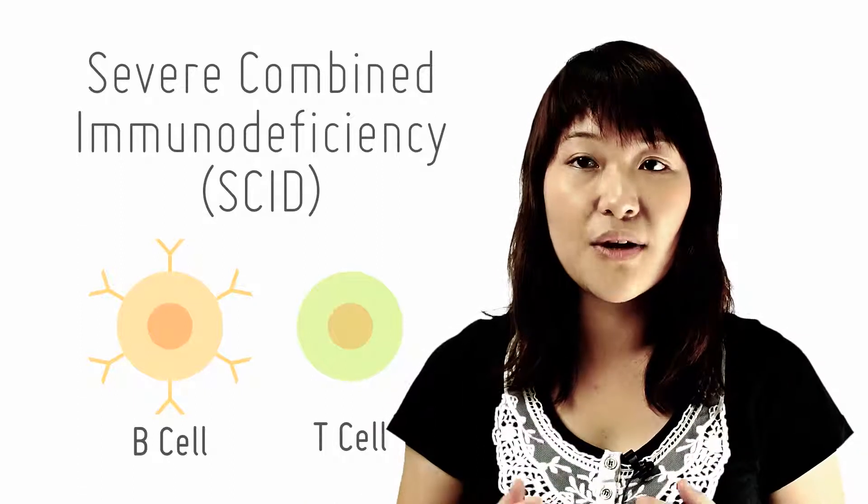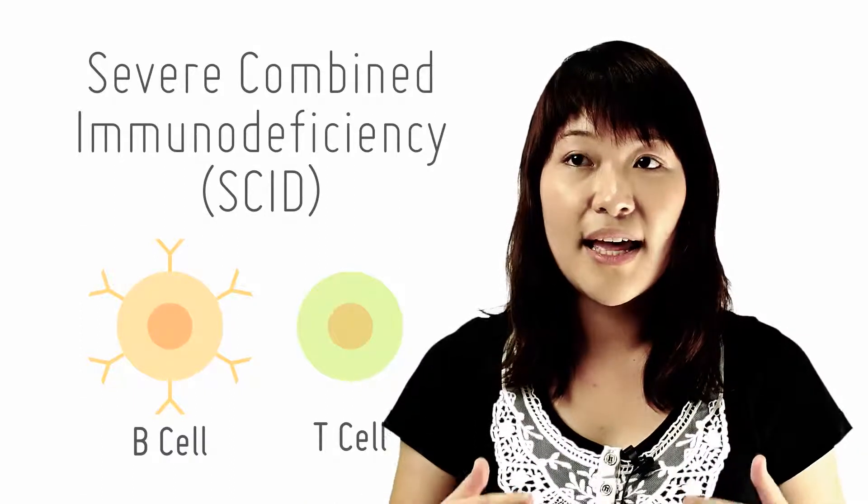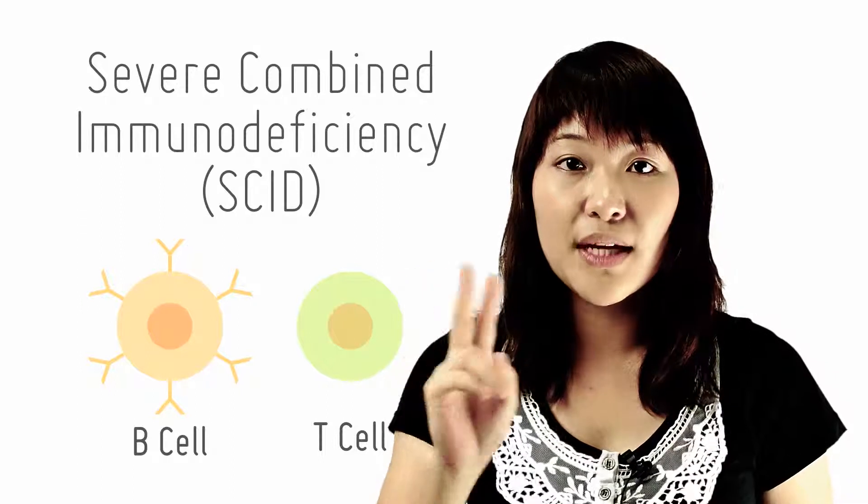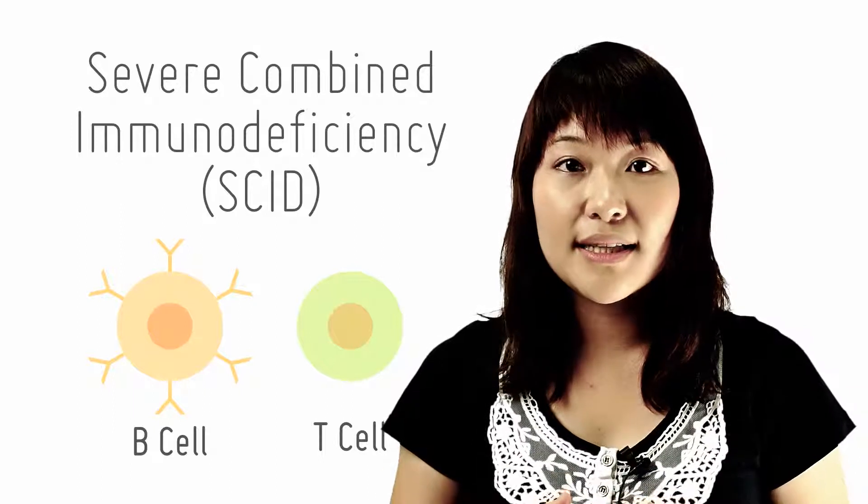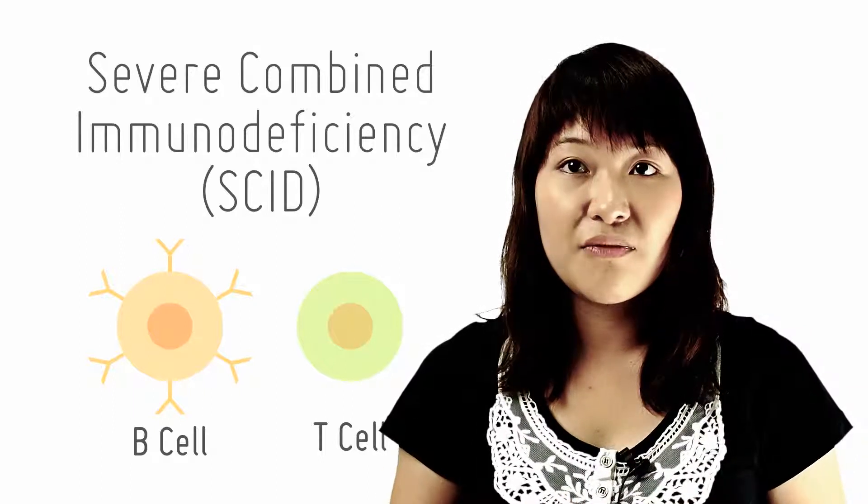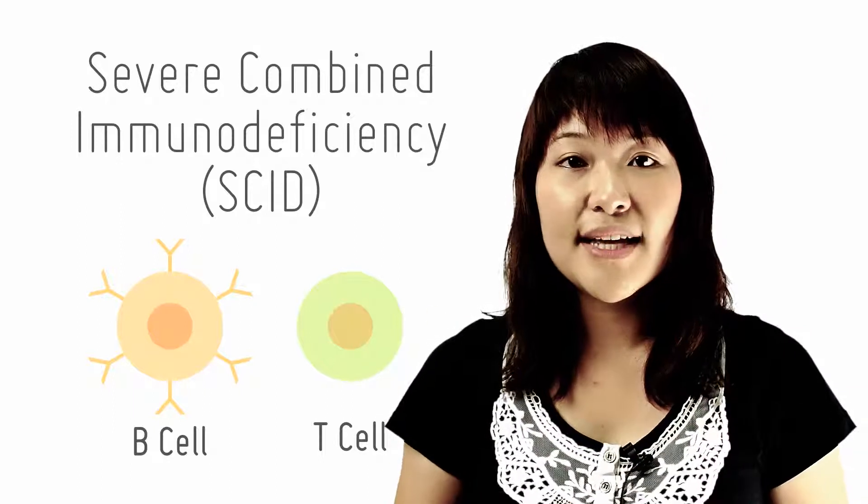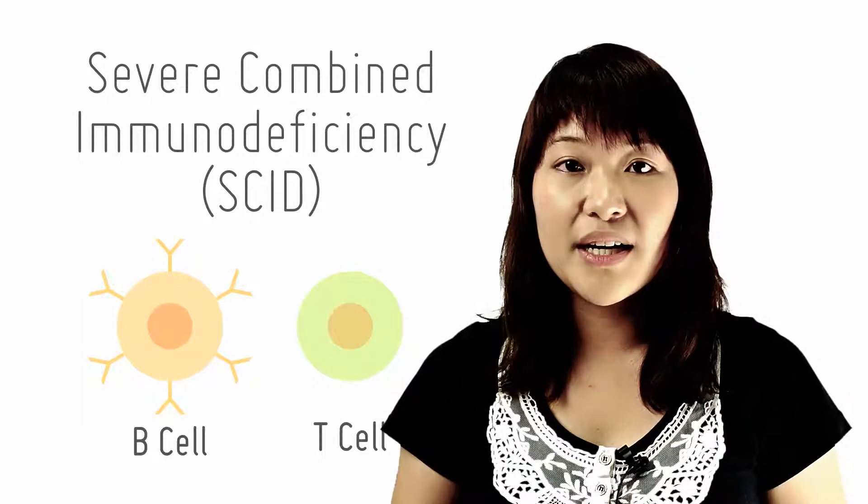It's also known as combined immune deficiency as it affects the function of two types of infection fighting cells, namely the T and the B cells, while other immune system diseases involve only one. It affects about one in every 100,000 births.